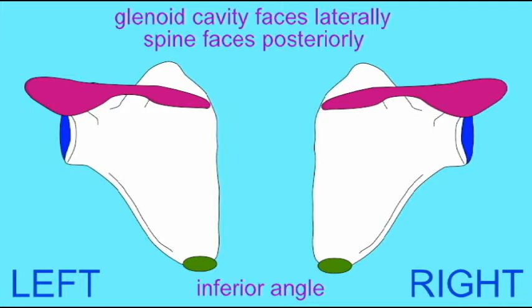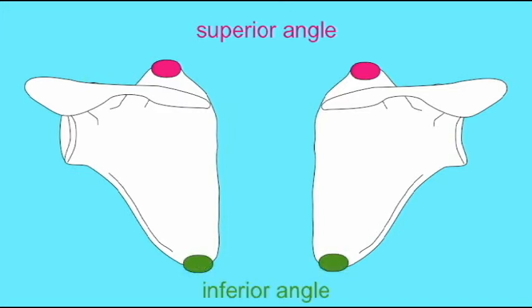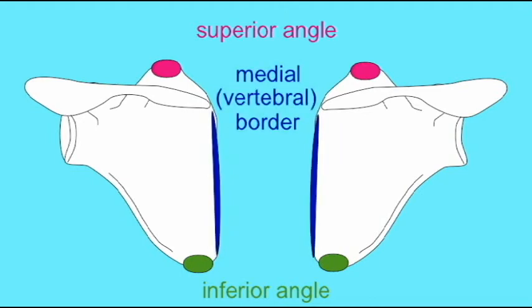Once you identify the glenoid cavity as the lateral portion, the spine and acromion as posterior, and the inferior angle as facing inferiorly, you can distinguish between left and right scapula blades. The scapula is roughly triangular, and once you distinguish between left and right, you can easily identify the superior angle, the inferior angle, the medial or vertebral border, and the lateral or axillary border.